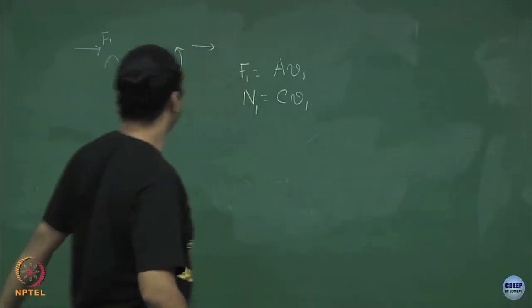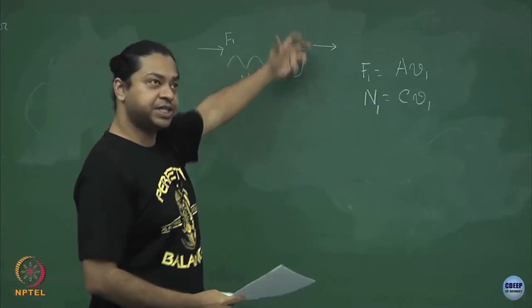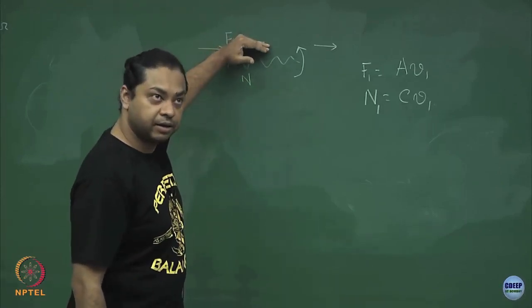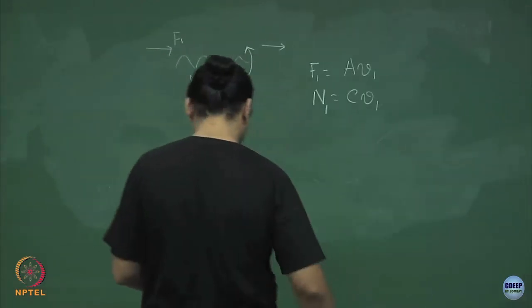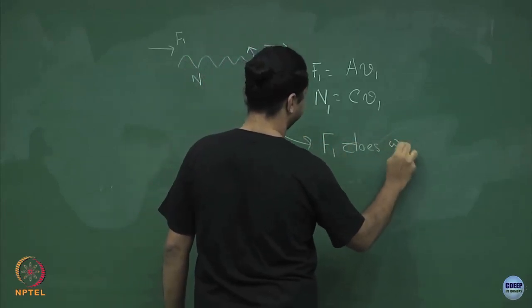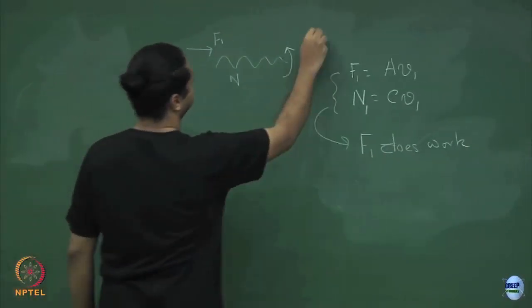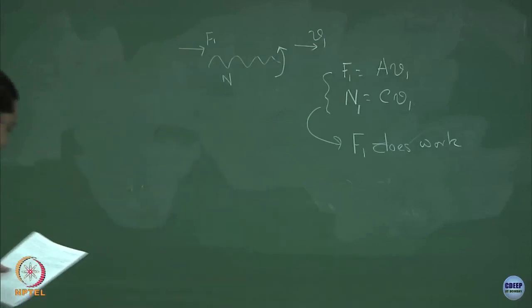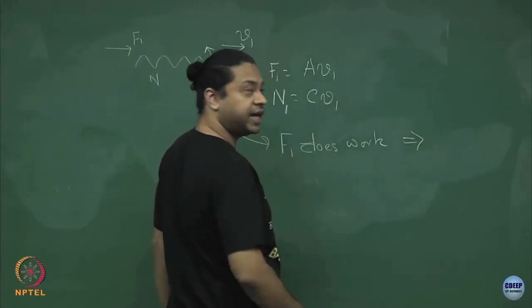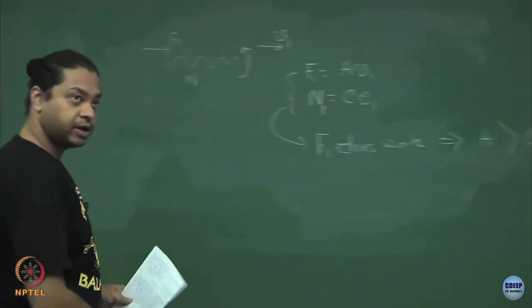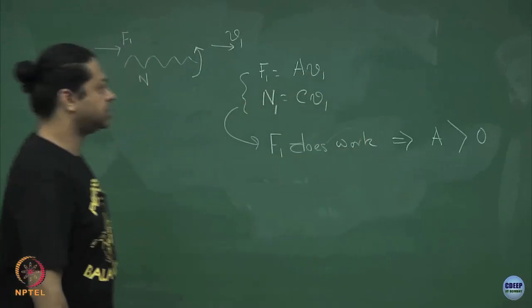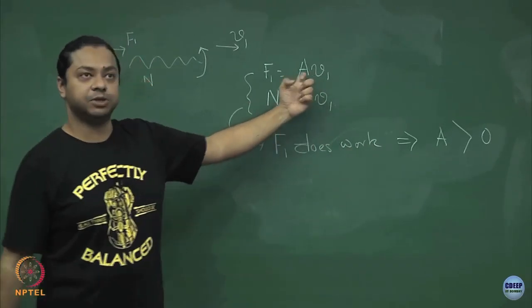Because there is no net rotation, this torque is not doing any work, which means the entire work is being done by this force. In this scenario, the external force f1 does whatever work is necessary to move this propeller with velocity v1. Because it is the only thing doing work, this coefficient a must necessarily be greater than 0, since it does net work over some distance.